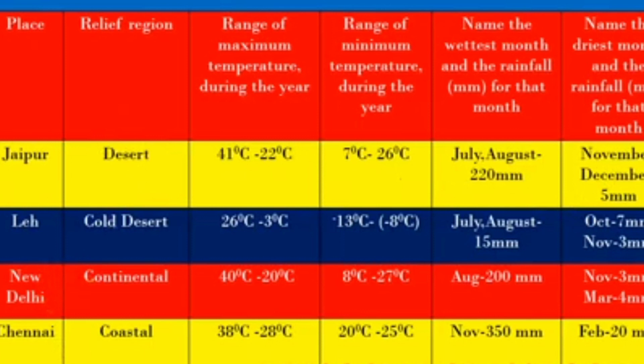For New Delhi: the relief region is continental. The range of maximum temperature during the year is 40 degrees Celsius to 20 degrees Celsius. The range of minimum temperature is 8 degrees Celsius to 27 degrees Celsius. The wettest month is August with 200 mm of rainfall. The driest months are November with 3 mm and March with 4 mm.